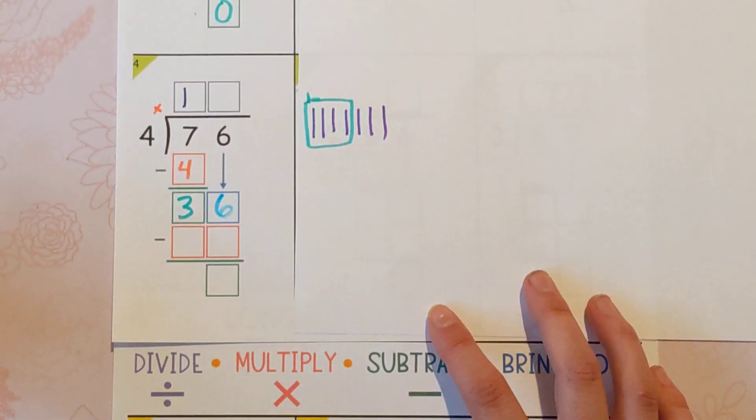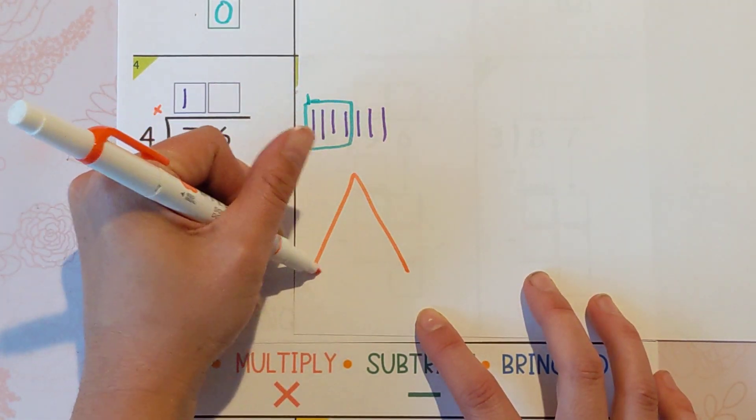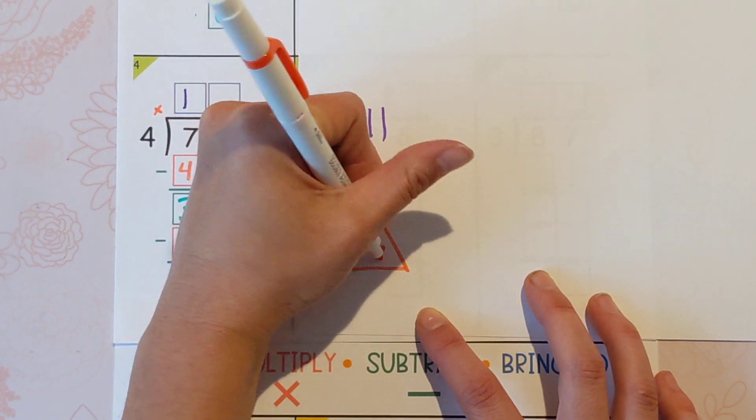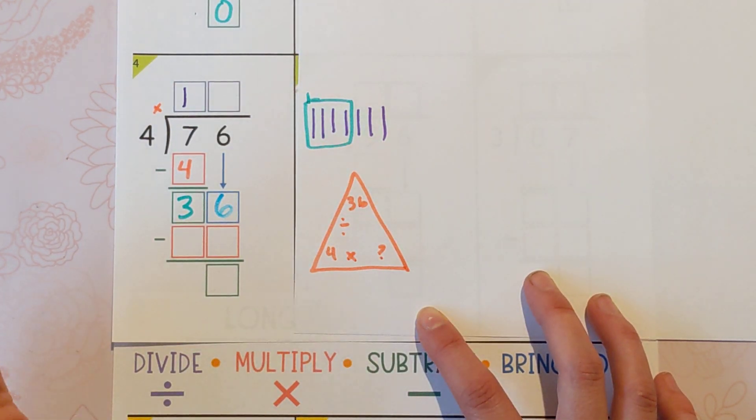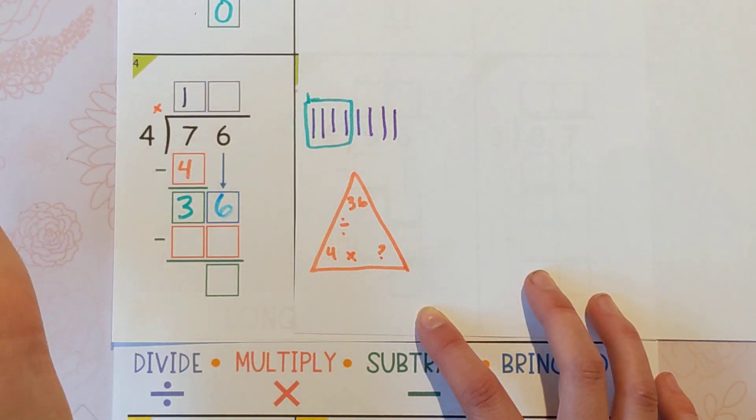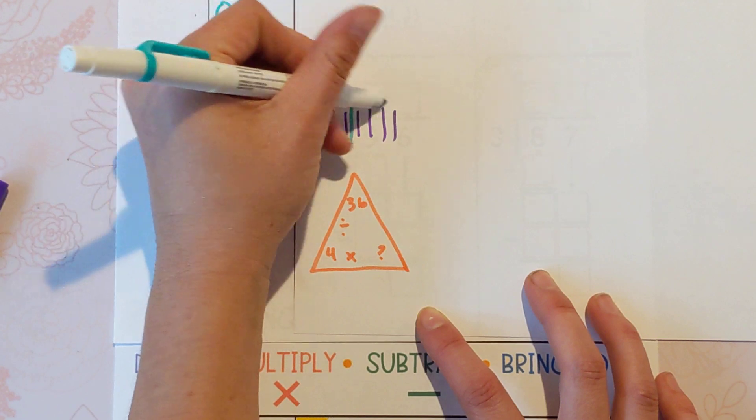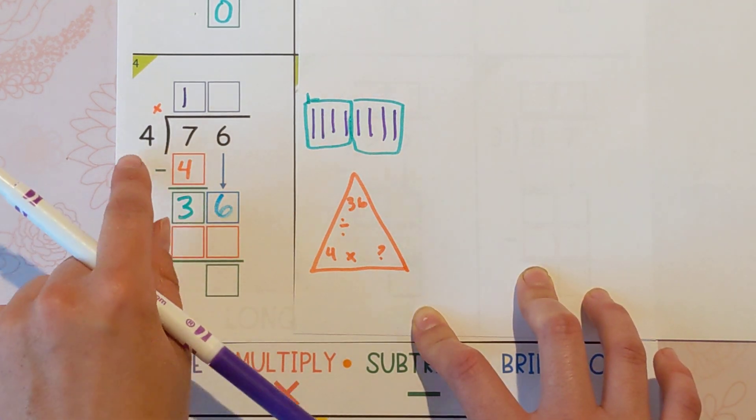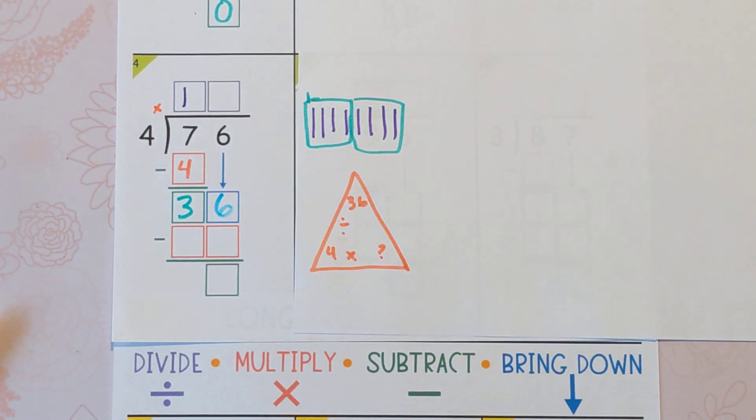Lots of ways to do this. Use whatever division strategy you like to use. You can use the times table. You can skip count your fours to get to 36. You can draw 36 tally marks and see how many groups of four you can get. Any way you do it, you're just trying to figure out what 36 divided by four is and put it in that box there.